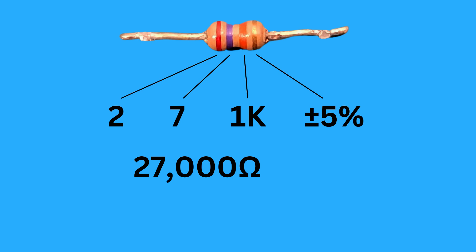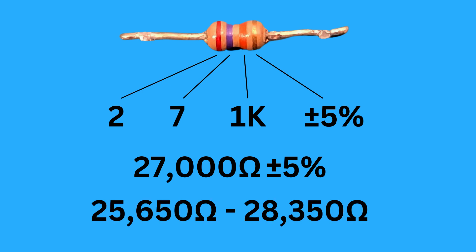Finally, the tolerance is plus and minus 5%. This means the real resistance can vary by up to 5% from the calculated value, so the resistor value can range between 25,650 ohms and 28,350 ohms.